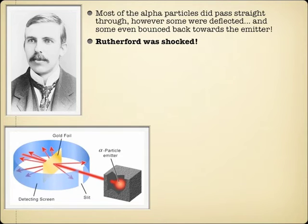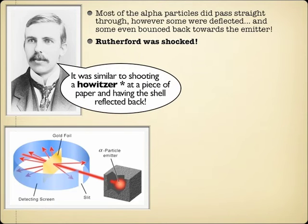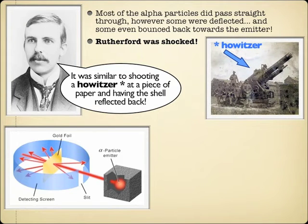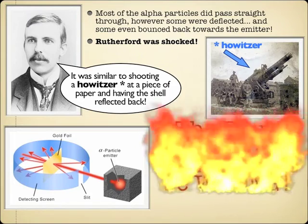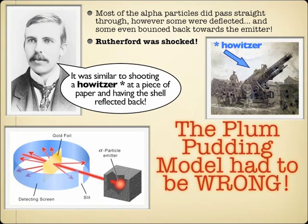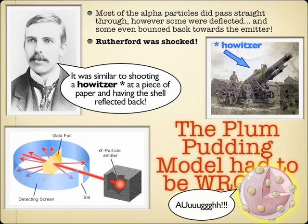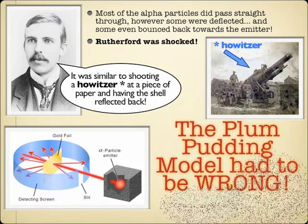He was really shocked by the fact that some of these alpha particles were deflected. In his own words, he said it was similar to firing a howitzer at a piece of paper and having the shell fired back. For those who don't know, a howitzer was a large artillery cannon at the time. What Ernest Rutherford realized from this is that the plum pudding model had to be wrong. It couldn't be a hazy positive charge at all — so sorry, figgy pudding, but you are no more.